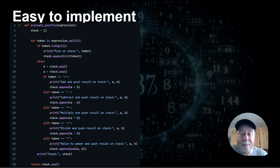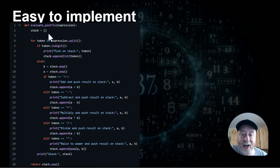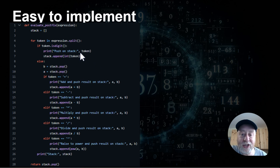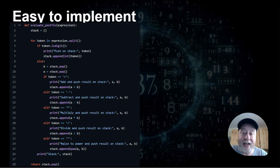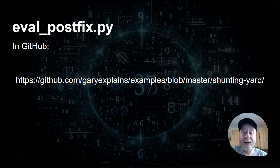This is really easy to implement. Here is a segment of Python code I've written — it's available on my GitHub repository. You can use a list in Python, appending things to the list and popping them off, which is the same as pushing and popping a stack. You literally say: if it's a number, push it onto the stack; if it's an operator — plus, minus, whatever — do the right thing with the last two things on the stack and put the result back. Really easy to implement in Python, C, Rust, Go, or whatever you're using. There'll be more scripts when we cover the shunting yard algorithm.